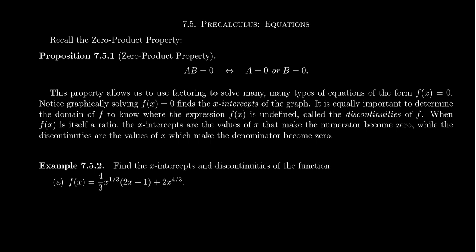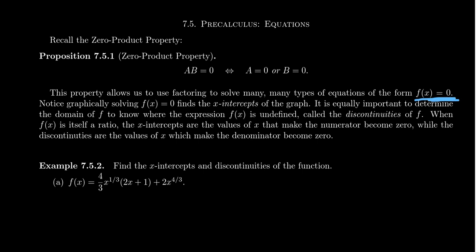Why is factoring a useful tool for solving equations? It comes down to the zero product property: if you have real numbers a and b, the only way the product a·b equals zero is if a equals zero or b equals zero — one of the factors had to equal zero. This property allows us to use factoring to solve many types of equations of the form f(x) = 0, which, as we said, is not a huge assumption because we can always make it that way.